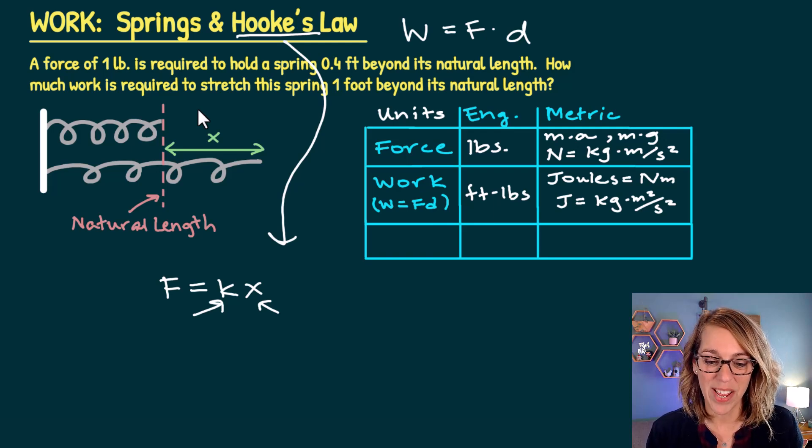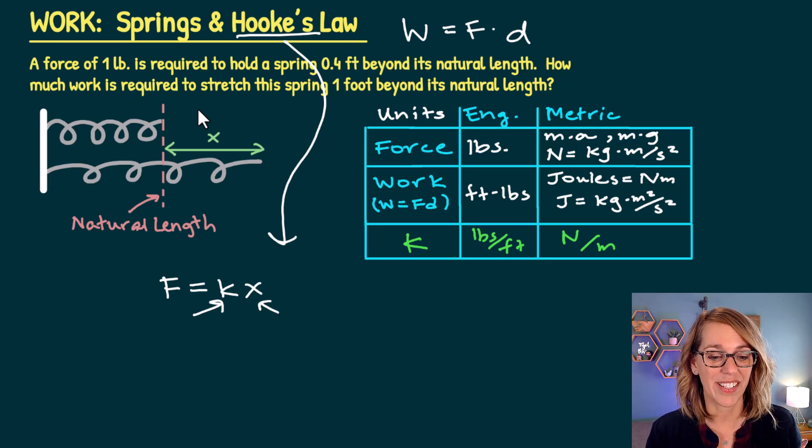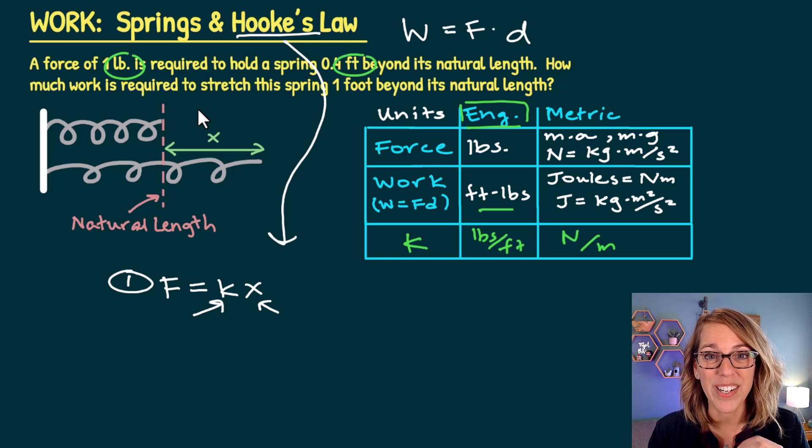So we have this k, which is our spring constant, and x, which is the distance stretched or compressed. I can add k to my table here with all my units. So k, if you're using English units, is going to be pounds per foot. And if you are using metric units, it's going to be newtons per meter. For this particular example, we have pounds and feet. So we are going to be using the English units. That means that I want that force in pounds. And my final answer, the work needed, is going to be in foot pounds. But the very first thing that we've got to do with these problems whenever we're doing a spring and work problem is to figure out that spring constant k.